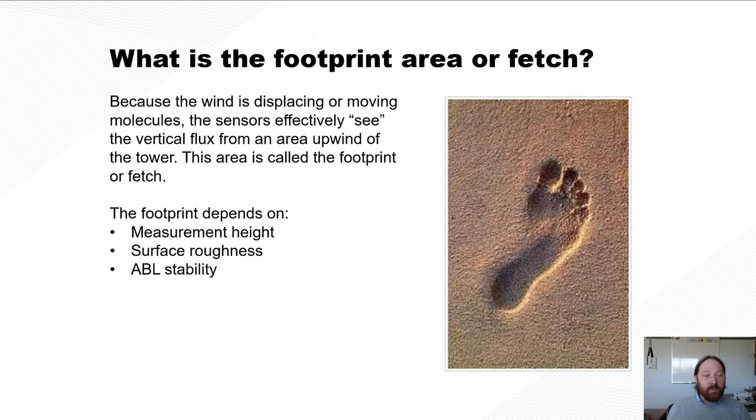Okay, so let's start with what is a footprint area or a fetch. So because the wind is displacing or moving molecules, the sensors effectively see the vertical flux from an area upwind of the tower, and this area is called the footprint or fetch.